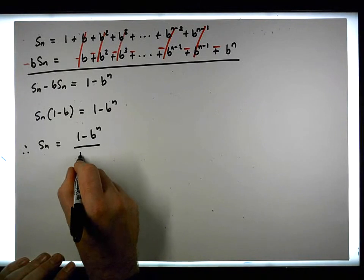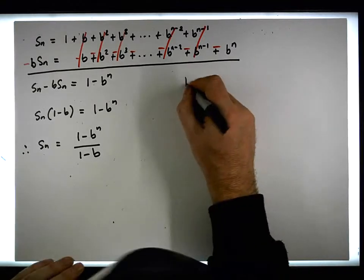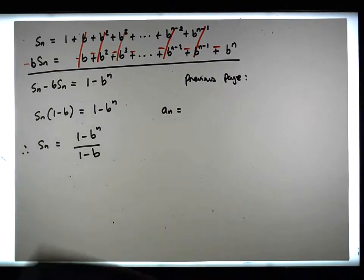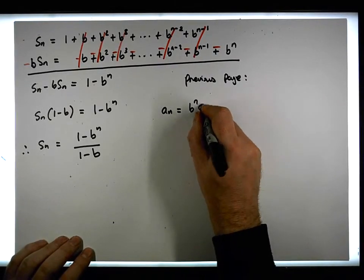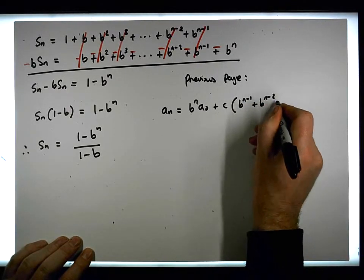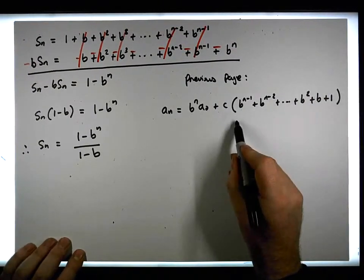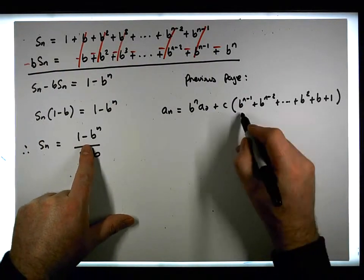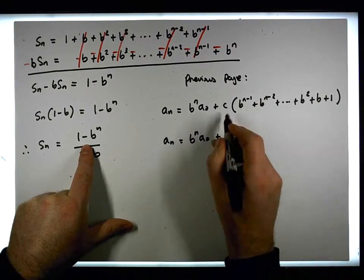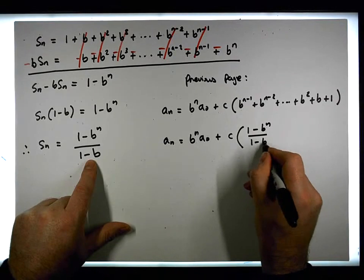Therefore Sn equals one minus b to the n, all over one minus b. Going back to the nth term from the previous page, we have that a to the n equals b to the n times a zero, plus c times the sum b to the n minus one plus b to the n minus two plus all the way down to b squared plus b plus one. We've just figured out what that summation is, so a_n equals b to the n times a zero plus c times one minus b to the n over one minus b.